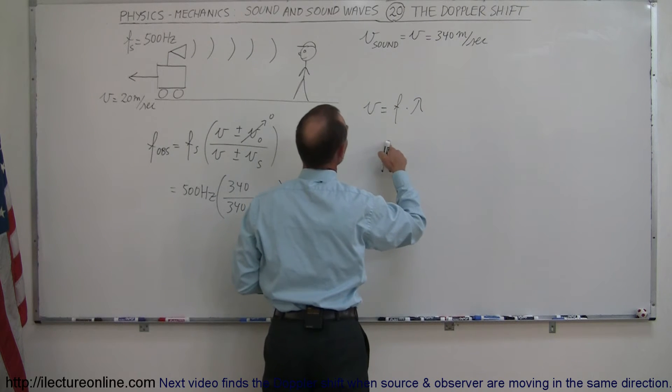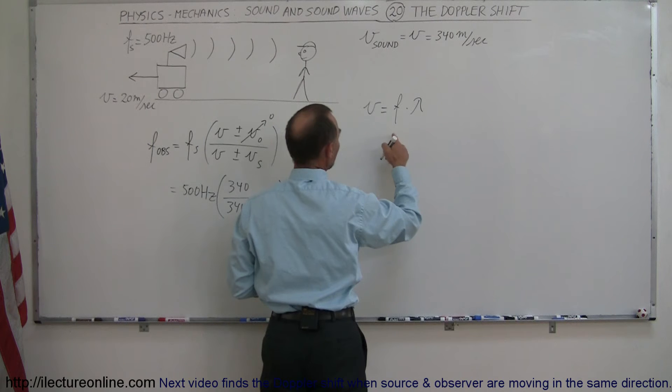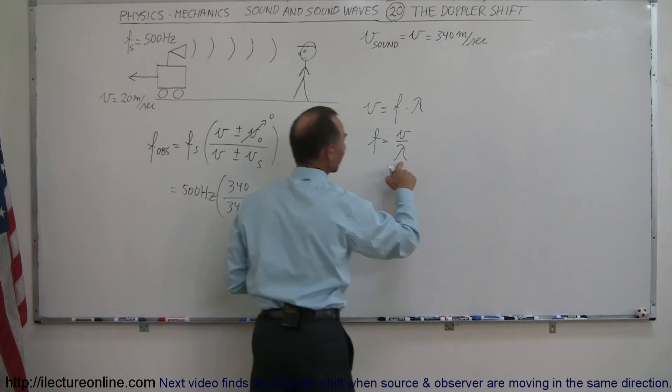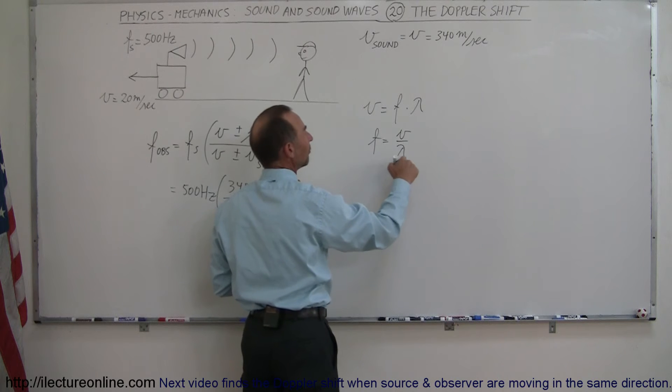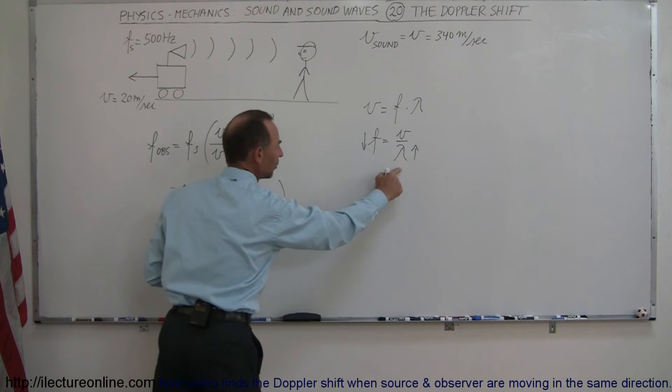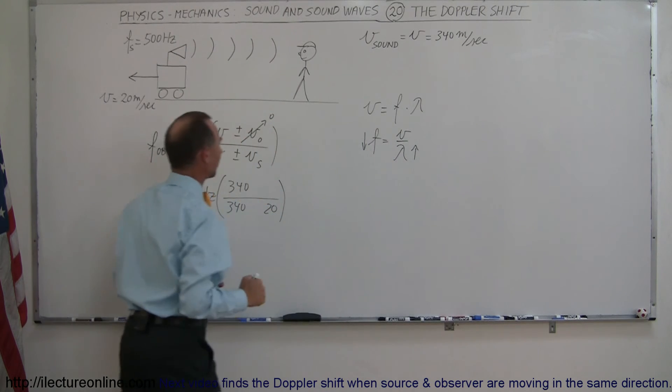So the frequency is therefore going to be velocity divided by the wavelength, and if the wavelength gets bigger, that means the frequency gets smaller, because that's in the denominator. Bigger denominator means smaller frequency.